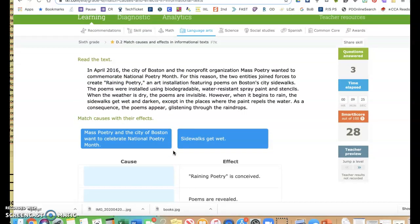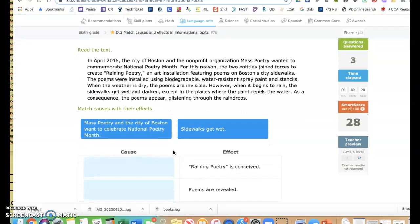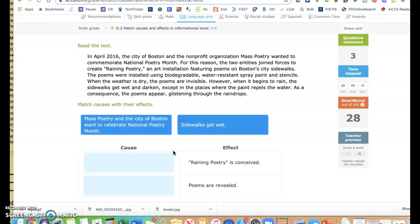In April 2016, the city of Boston and the non-profit organization Mass Poetry wanted to commemorate National Poetry Month. For this reason, the two entities joined forces to create Raining Poetry, an art installation featuring poems on Boston's city sidewalks. The poems were installed using biodegradable, water-resistant spray paint and stencils. When the weather is dry, the poems are invisible. However, when it begins to rain, the sidewalks get wet and darken, except in the places where the paint repels the water. As a consequence, the poems appear glistening through the rain drops.